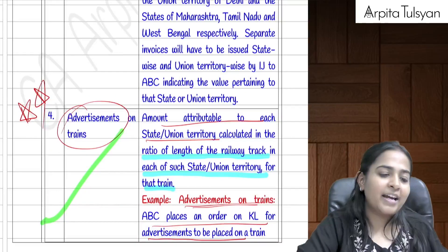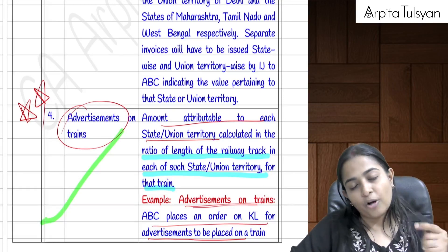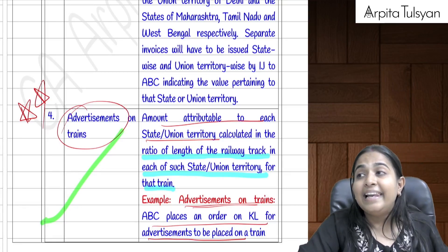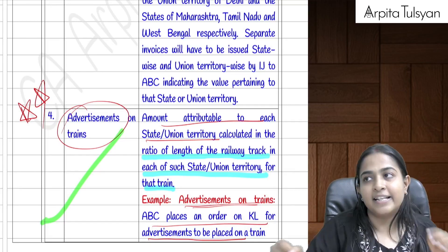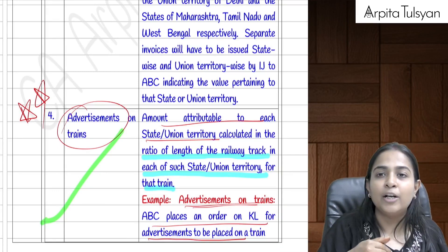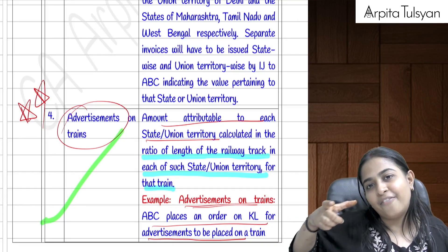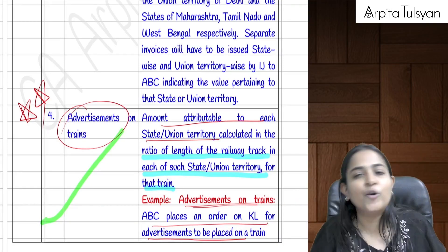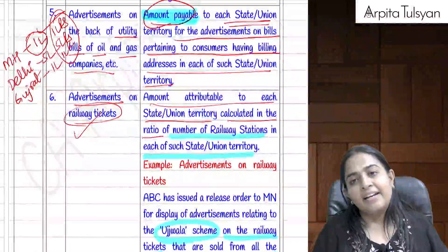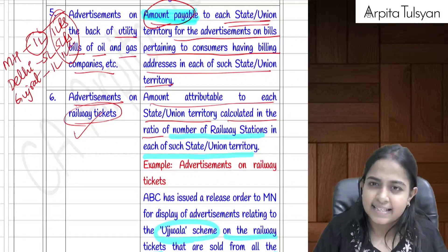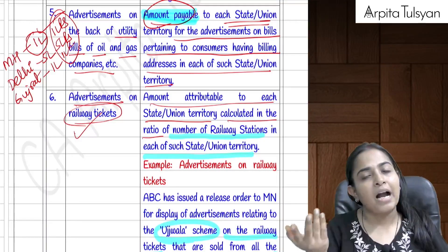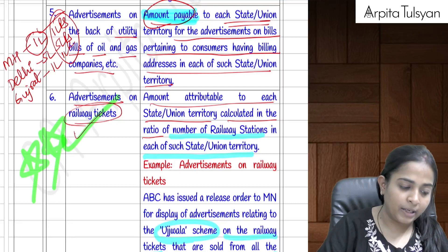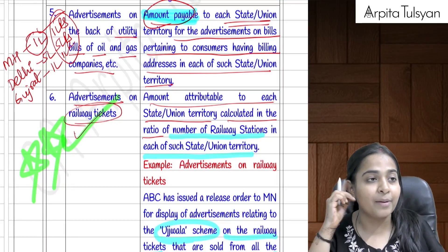For advertisements on trains, the consolidated amount is divided in the ratio of the length of railway track in each state or union territory — the track lengths are available at indianrailways.gov.in. For advertisements on the back of utility bills (e.g., gas bills), the amount is divided on the basis of amounts payable for each state. For advertisements on railway tickets, the split is in the ratio of the number of railway stations in each state or union territory.